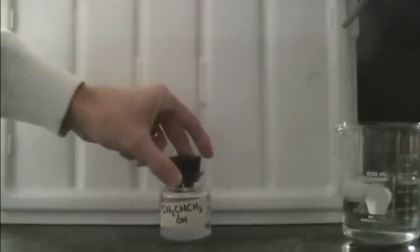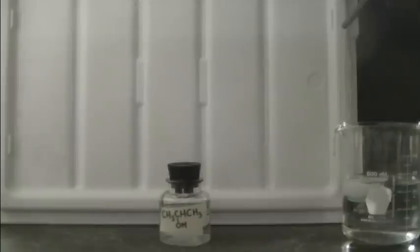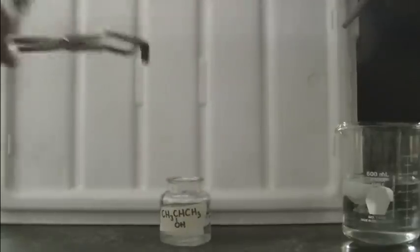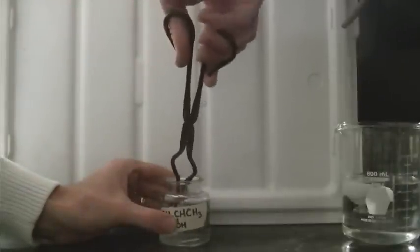Now we're going to test the third alcohol isopropanol. And one might hypothesize that because the methanol one carbon alcohol completely combusted, the two carbon alcohol ethanol showed some signs of both complete combustion and incomplete combustion, one might surmise that the isopropanol which is three carbons long will follow this trend. And we should see a lot more incomplete combustion rather than complete combustion with the isopropanol. Let's run the combustion reaction and find out.